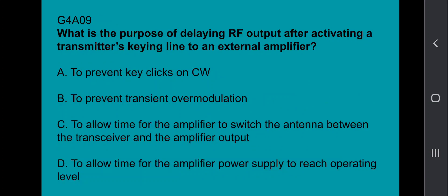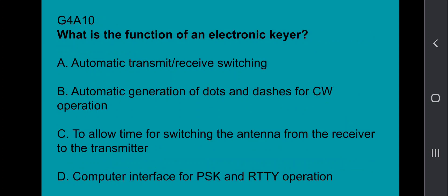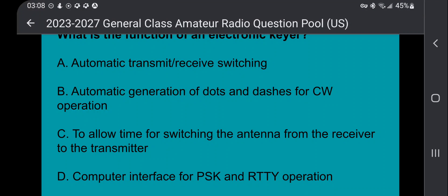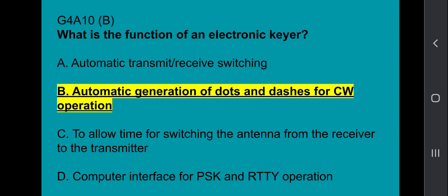G4A09, what is the purpose of delaying RF output after activating a transmitter's keying line to an external amplifier? To allow time for the amplifier to switch the antenna between the transceiver and the amplifier output. G4A10, what is the function of an electronic keyer? The answer is automatic generation of dots and dashes for CW operation.